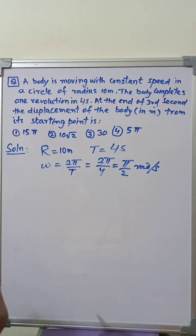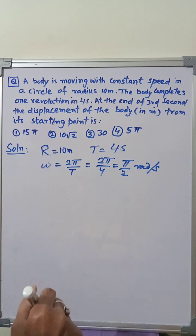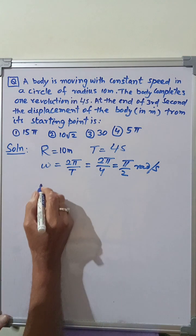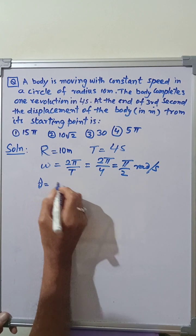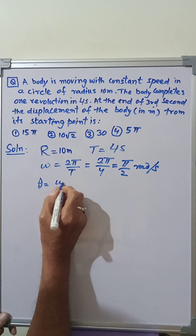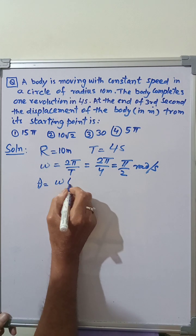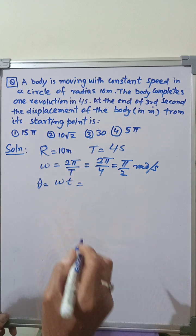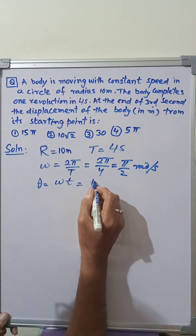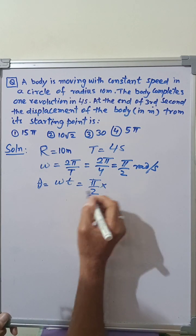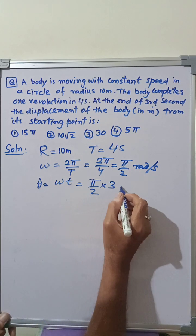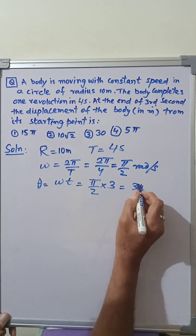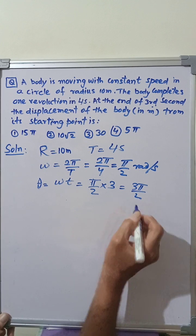Therefore, the angle described by the body in three seconds is given by theta is equal to ω into t is equal to π by 2 into 3 seconds. Therefore, this is equal to 3π by 2 radians.